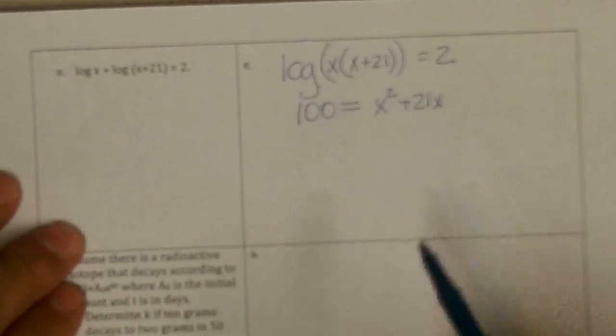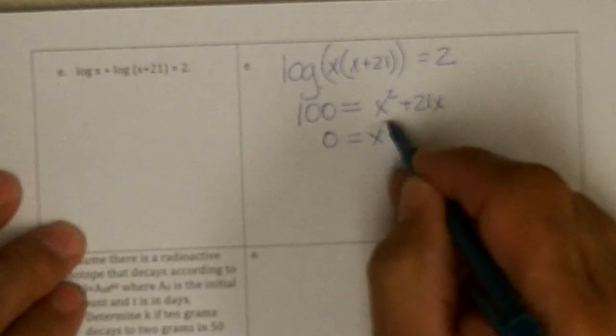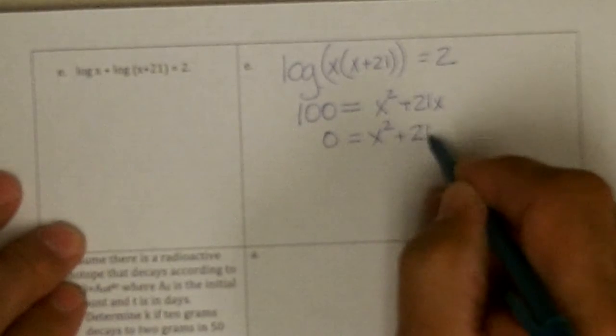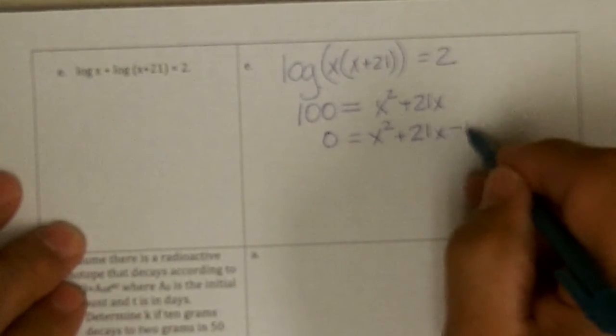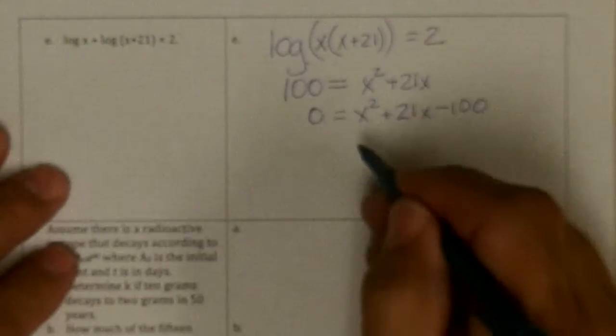I have a quadratic. If I subtract 100, I get 0 equals x squared plus 21x minus 100. You could use the quadratic formula, but this factors.